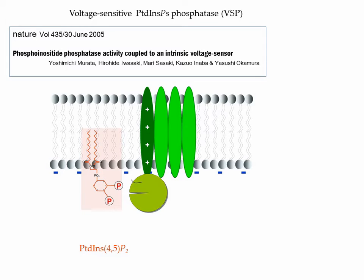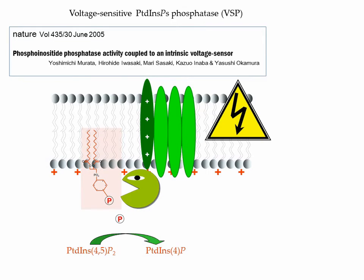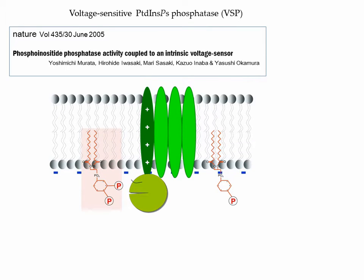We were also motivated in this project by the discovery 10 years ago of a voltage-sensitive phosphoinositide phosphatase. It is a protein which has a membrane-spanning region with a voltage-sensitive domain very similar to what is found in voltage-gated ion channels, but there is no ion channel. There is a phosphoinositide phosphatase capable of dephosphorylating PIP2, and dephosphorylation of PIP2 is triggered by membrane depolarization. This makes it a magnificent molecular tool to trigger a decrease in the level of PIP2 in the plasma membrane of a living cell simply by depolarizing this membrane, and very easy to stop the decrease in PIP2 by repolarizing the membrane. So we thought expressing a VSP in muscle fibers would be an interesting way to study the role of PIP2 in excitation-contraction coupling.